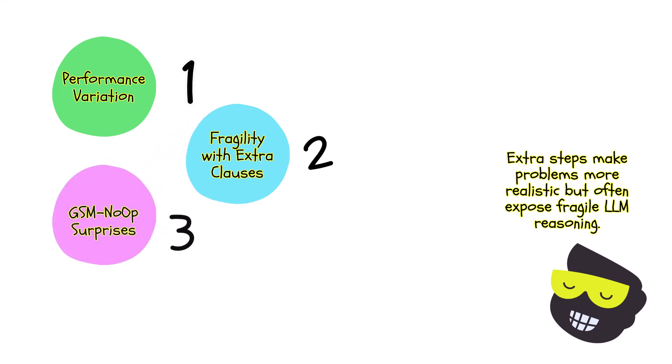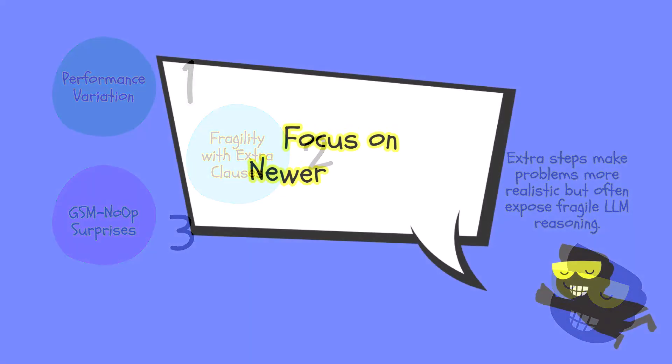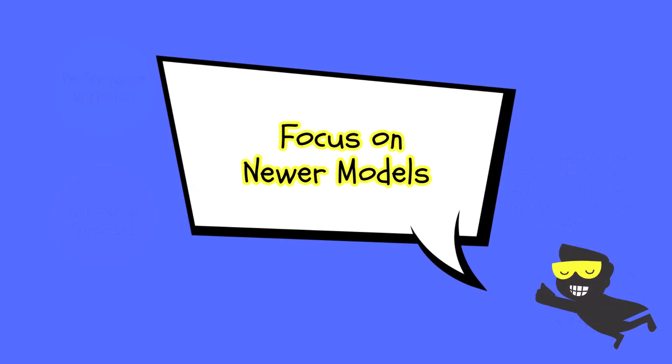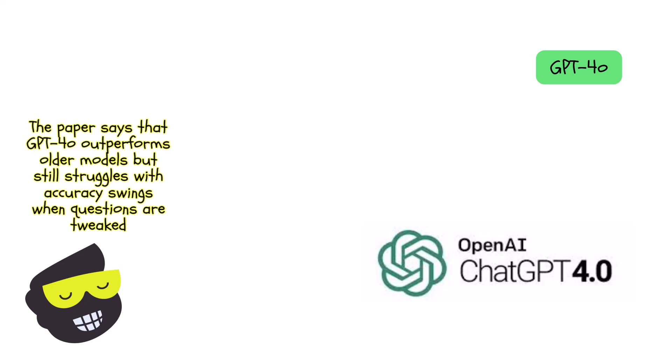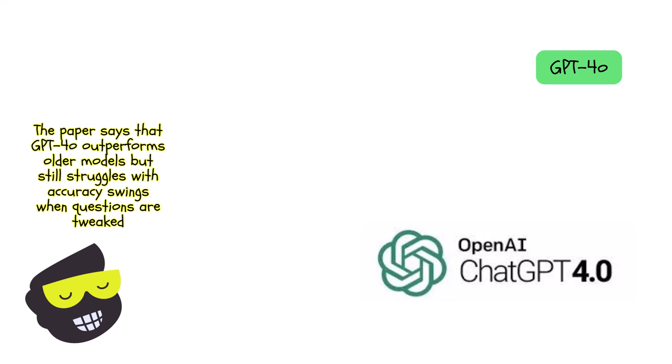Then we have the GSM no operational value surprises. If you say he picked five smaller kiwis, even if it shouldn't affect the total, many LLMs subtract those five kiwis from the final answer anyway. The paper highlights that GPT-4O is significantly better than earlier open models, like older Llama variants. But even GPT-4O suffers from some accuracy swings when the question is tweaked.